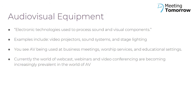AV gear is technically defined as electronic technologies used to process sound and visual components. Examples include video projectors, sound systems, and stage lighting. You see AV being used in business meetings, worship services, and educational settings.